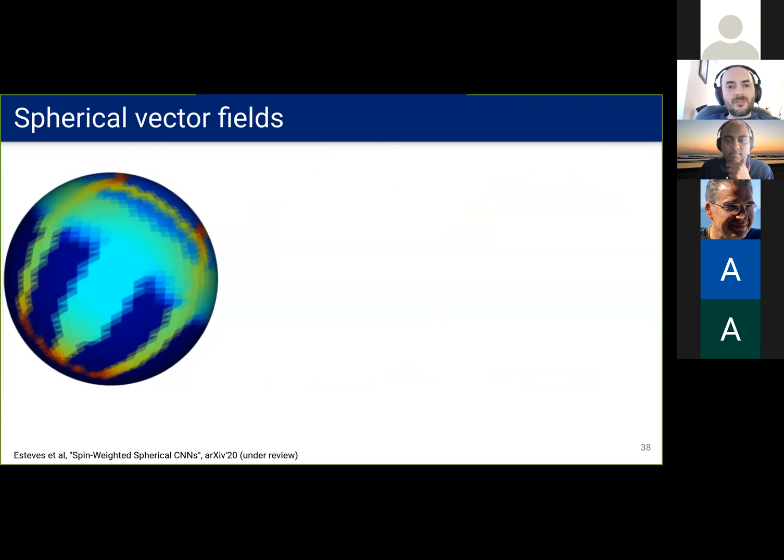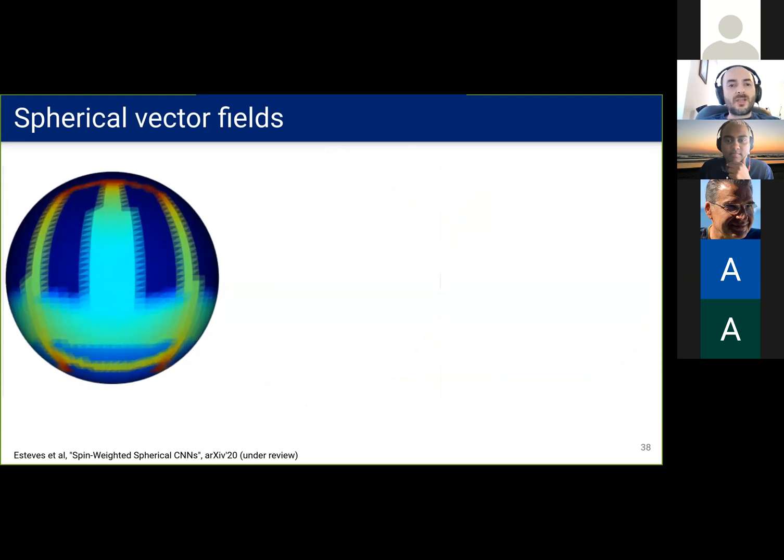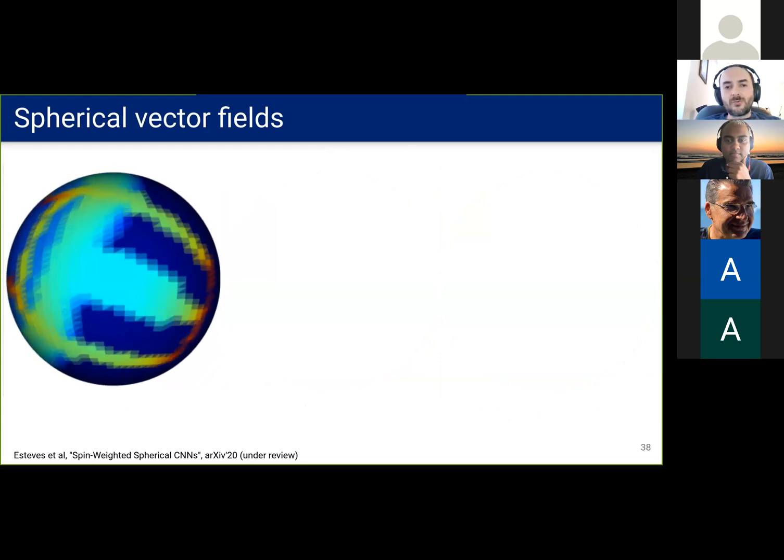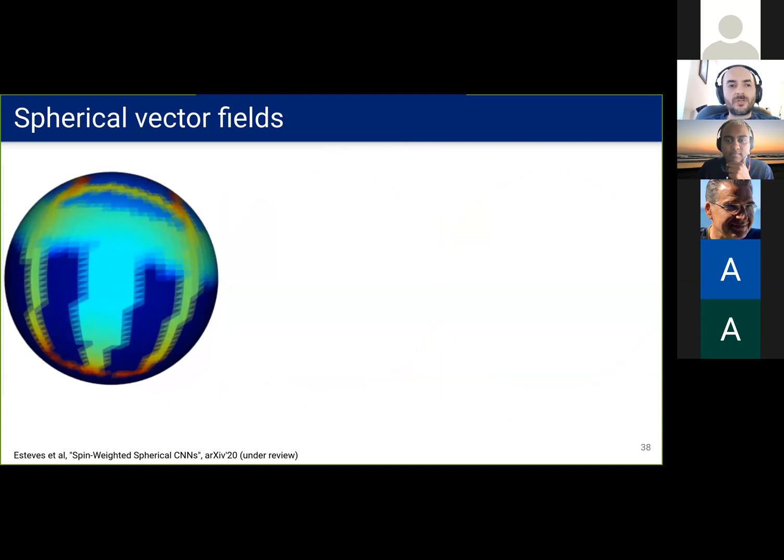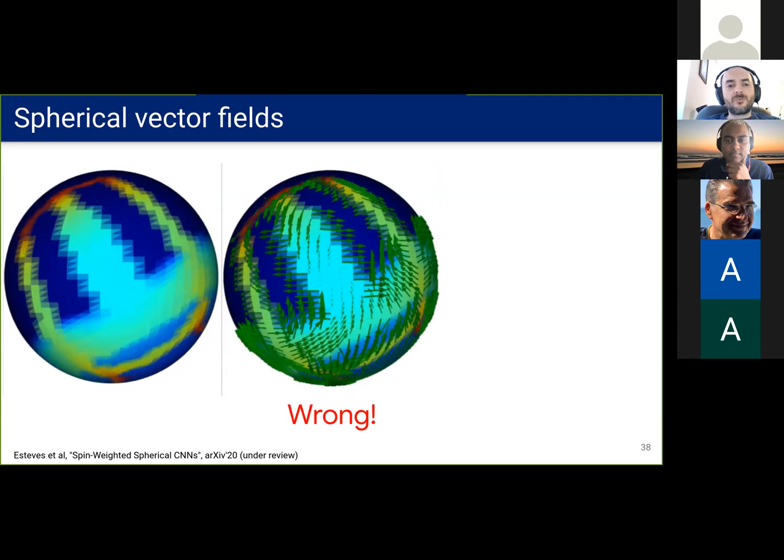Now we clarify the differences between scalar and vector field equivariance here. This is how a scalar field on the sphere rotates. The RGB channels move independently to another position on the sphere upon rotation.